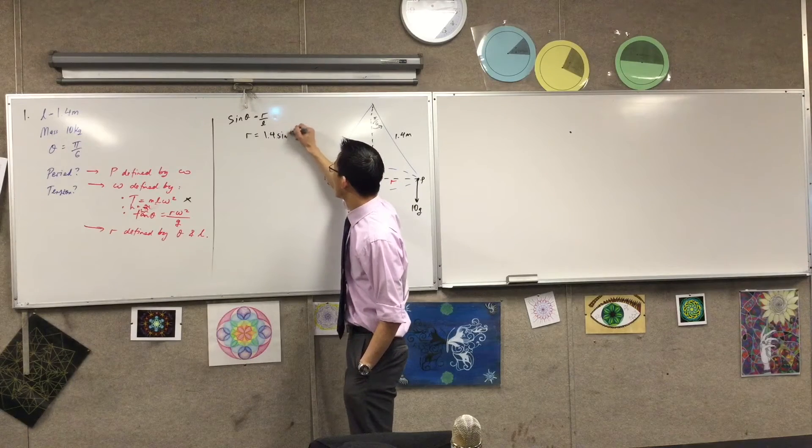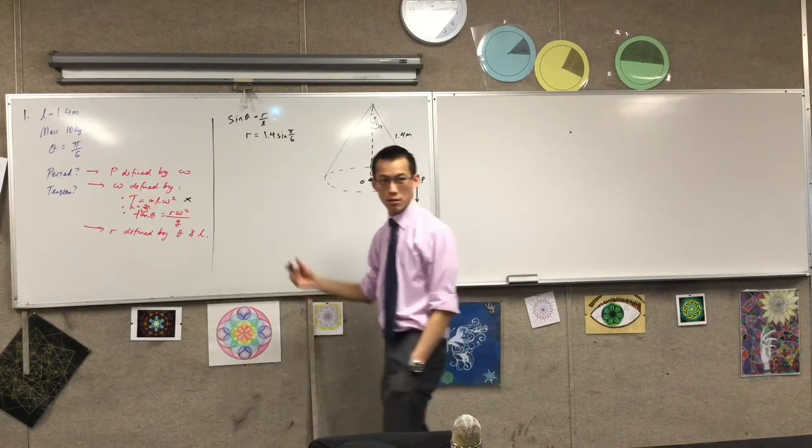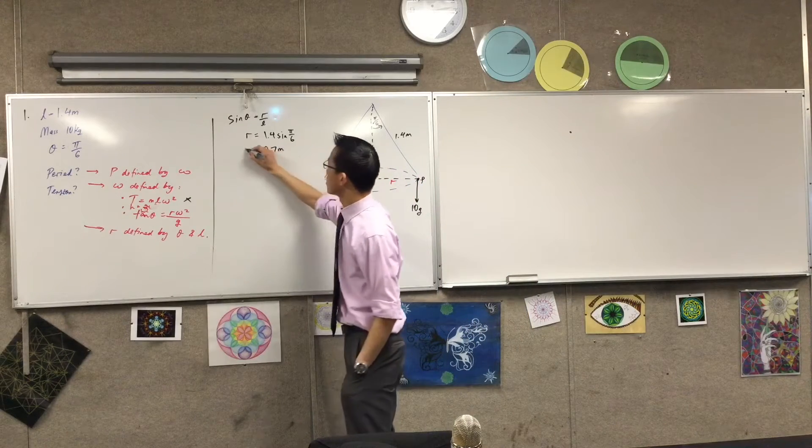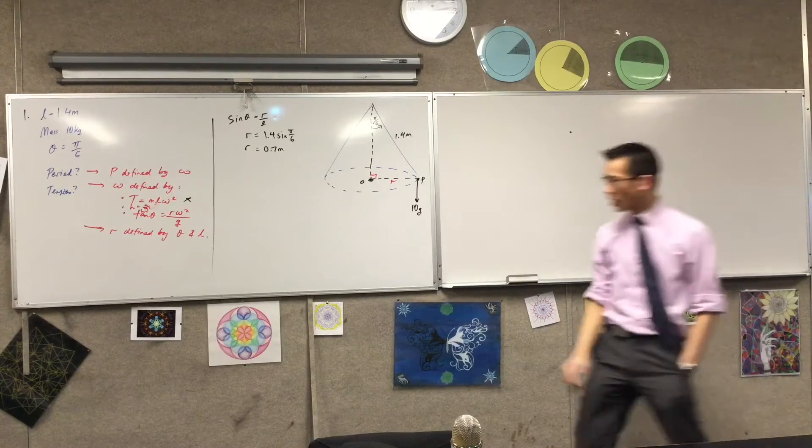1.4 sine pi on 6. So the radius is? Okay, good. Meters? Good. What was I using that again for? To sub into 10. Okay, good.